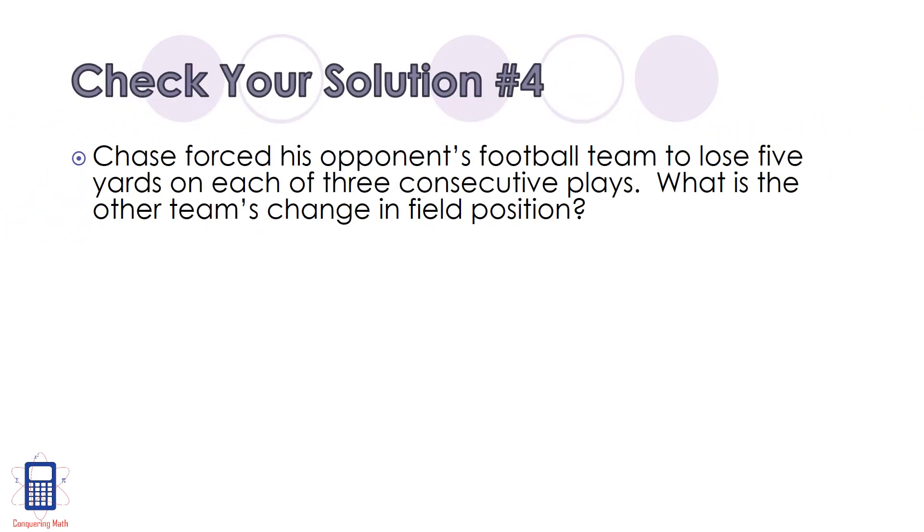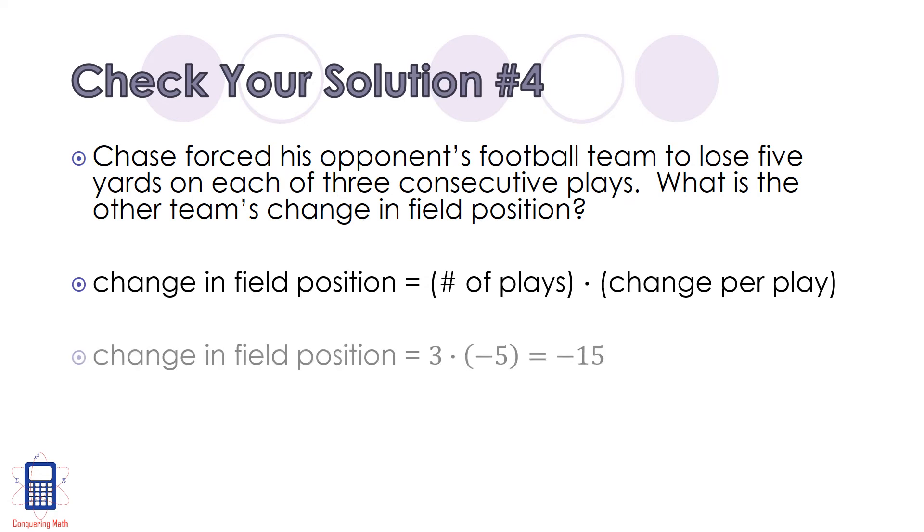Your best bet to solve this problem is to start by writing it out in words. This time you're looking for the change in field position for the opposing team, and this is going to be equal to the number of plays times the change in position per play. In this case, we know that there were 3 plays made, and that they lost 5 yards on each play, which means we'll represent the change per play with the number -5. Since we have 3 times -5, we have a positive times a negative.